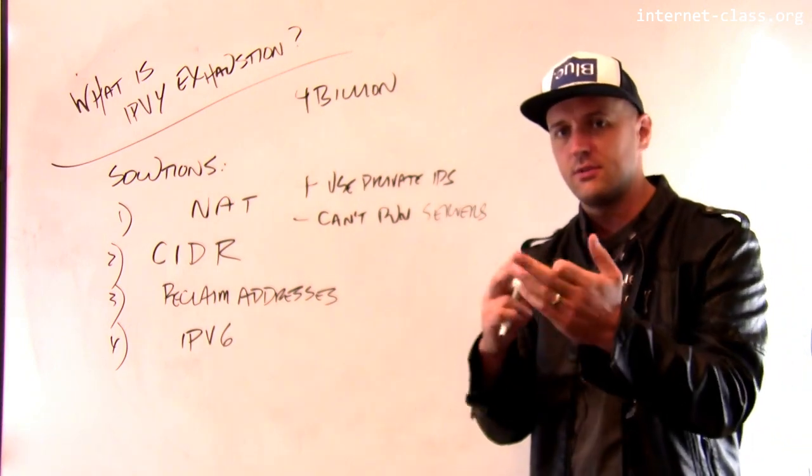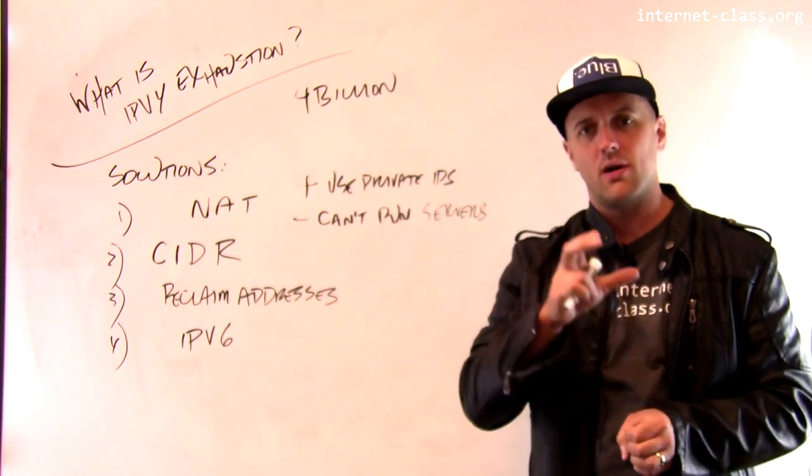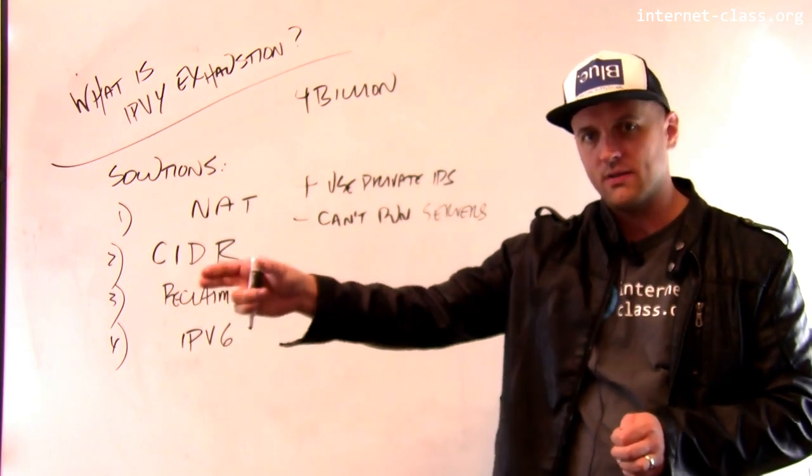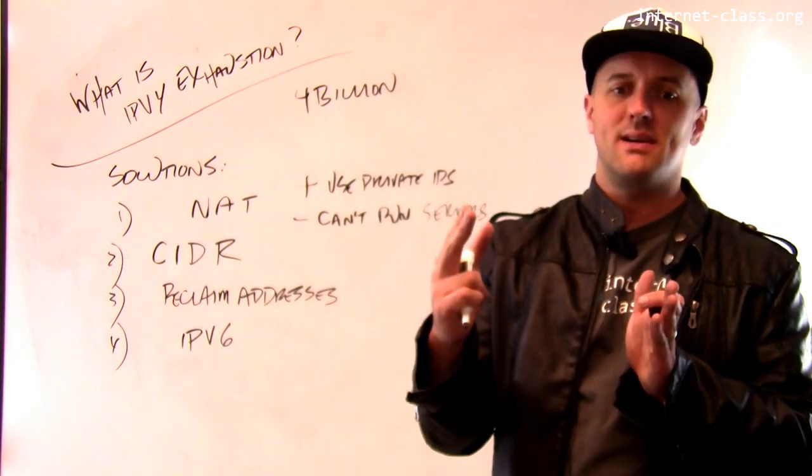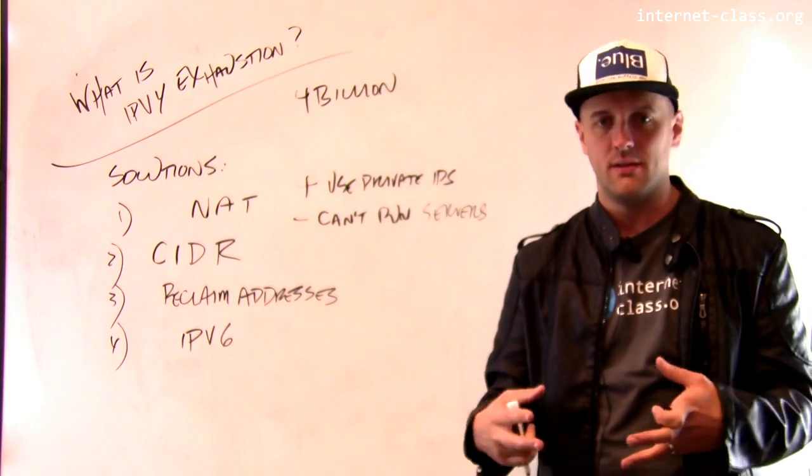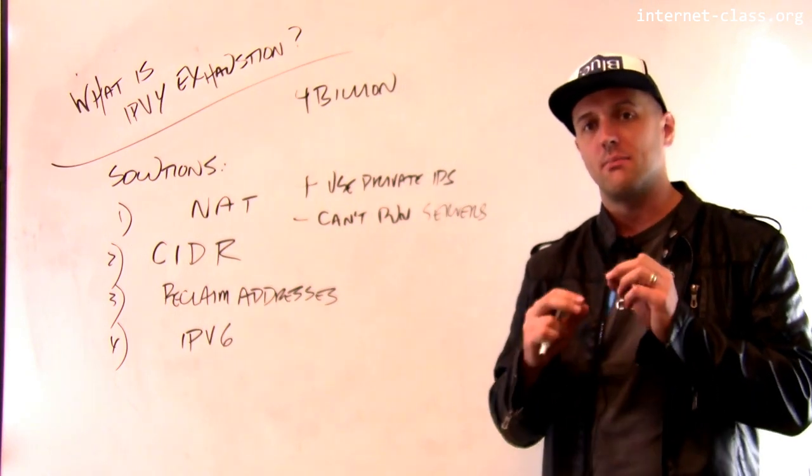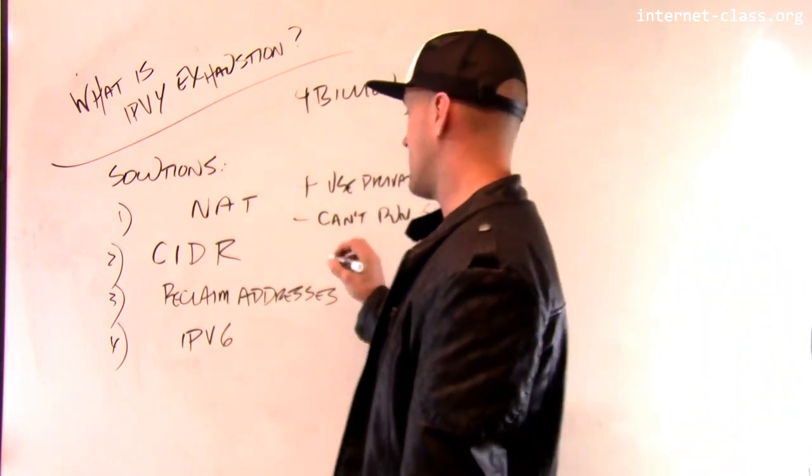And so what we started to do is we started to, rather than dividing, rather than creating prefixes that are all on 8-bit boundaries, we started to make prefixes that could be 20-bit, prefixes that could be 18-bit, and what that means is that we can create networks that are any size that's a power of 2.